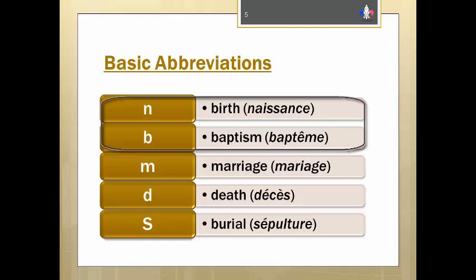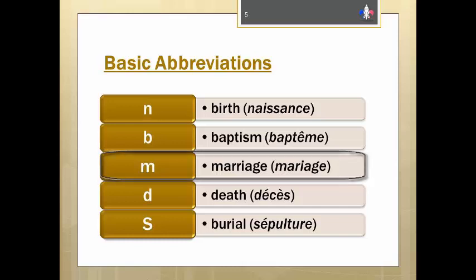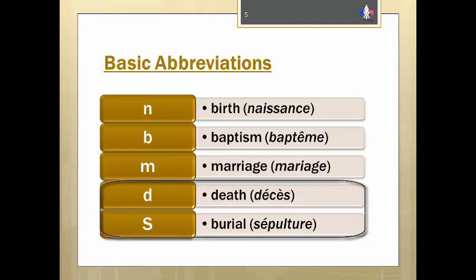The French word for birth is naissance, so birth is abbreviated with an N. Mariage for marriage is fairly simple, and the abbreviation is M. We mostly see an S at the end of a person's life, but that does not signify death, but rather burial, which in French is sepulture. D is used for the abbreviation for death, which is d'essai in French.